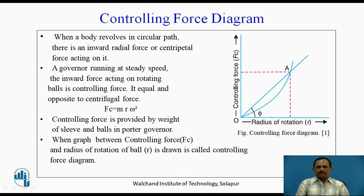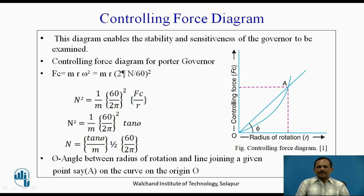Controlling force diagram: when a body revolves in a circular path, there is an inward radial force or centripetal force acting on it. When a governor is running at a steady speed, the inward force acting on the rotating ball is known as the controlling force. It is equal and opposite to the centrifugal force, given by Fc = mrω². In the case of the Porter governor, the controlling force is provided by the weight of the sleeve and ball. When the graph between controlling force and radius of rotation of the ball is drawn, it is called the controlling force diagram. This diagram enables the stability and sensitiveness of the governor to be examined.